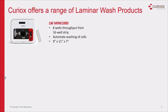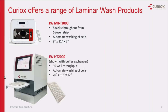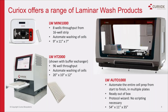The laminar wash family of systems has a variety of throughput and automation levels to suit every lab's workflow and budget. The compact Mini offers 8-well washing throughput and is popular among mass cytometry and single-cell sequencing users. For higher throughput, the HT-2000, shown here with an LCD touchscreen interface and optional automated buffer exchanger, processes 96 wells at once. The Auto-1000 integrates the HT-2000 and buffer exchanger in a Hamilton Nimbus automated liquid handling system, coming pre-programmed with modifiable protocols that require no programming. Unlike custom or centrifugation-based systems, the Auto-1000 provides easy turnkey automation that is more compact, affordable, and lower maintenance.